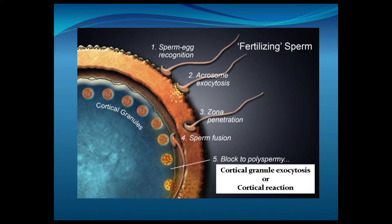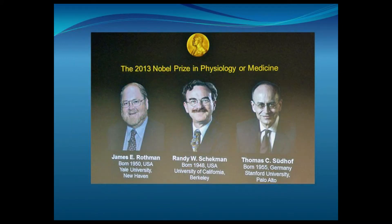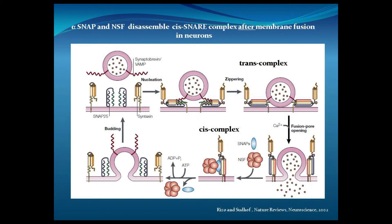We are interested in elucidating the mechanism of this very particular exocytosis. Everything that we know about exocytosis has been studied in neurons. I would like to note that these cortical granules only fuse if one sperm arrives and fuses with the oocyte, and these granules are never renewed once the sperm binds. Dr. Rothman, Schekman, and Südhof won the Nobel Prize in 2013 for their contributions to the mechanism of exocytosis and membrane fusion during this process.